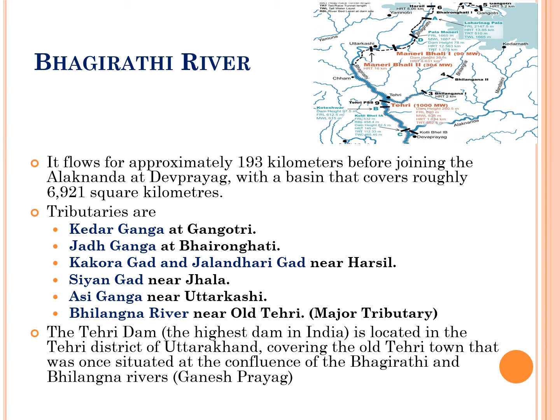The headwaters of the Bhagirathi are formed at Gomukh, at the foot of the Gangotri glacier in the Garhwal Himalayas. Bhagirathi river flows for approximately 193 kilometers before joining the Alaknanda at Devprayag, with a basin that covers roughly 6,921 square kilometers. Bhagirathi river is smaller when compared to Alaknanda river.